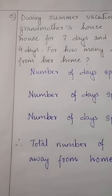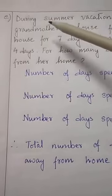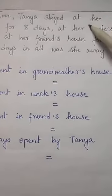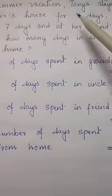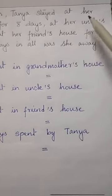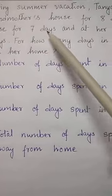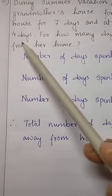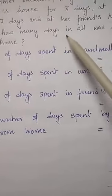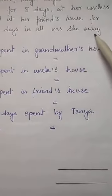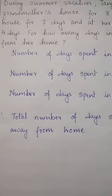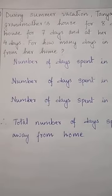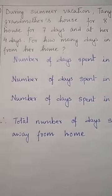Next is question number E, let's do it. During summer vacation, Tanya stayed at her grandmother's house for 8 days, at her uncle's house for 7 days, and at her friend's house for 4 days. For how many days in all was she away from her home? This is a long question, but don't worry — read it part by part and let's try to solve it.